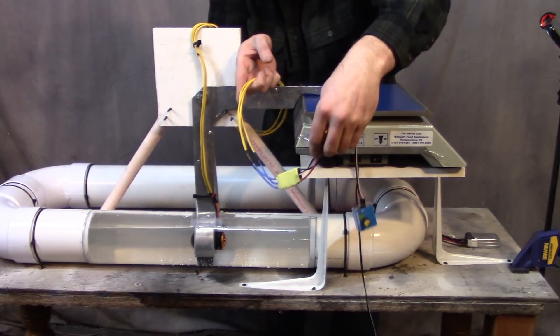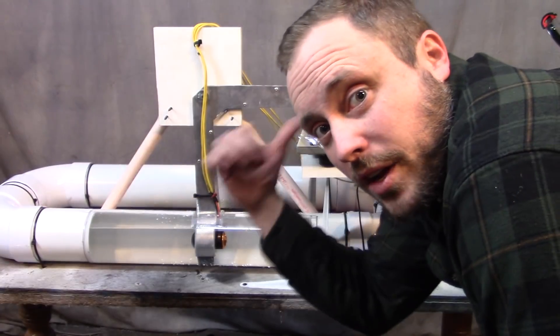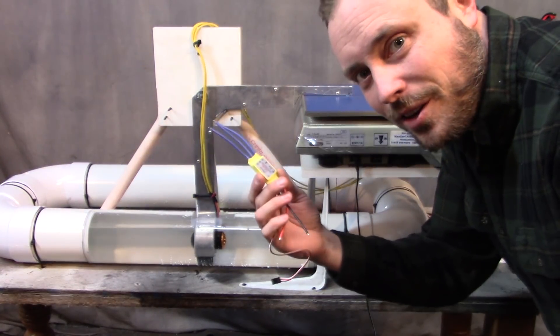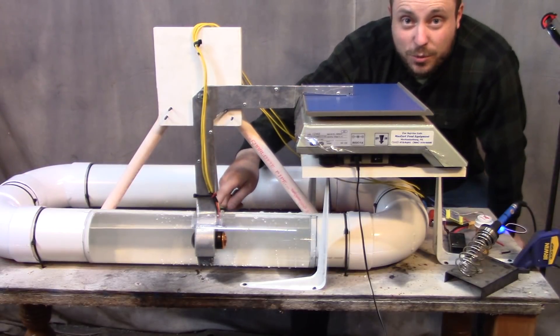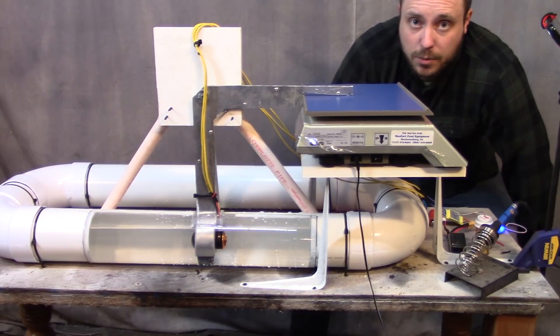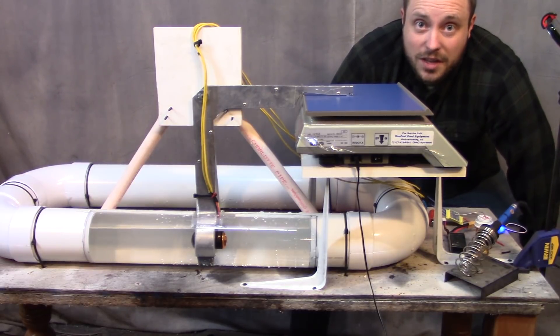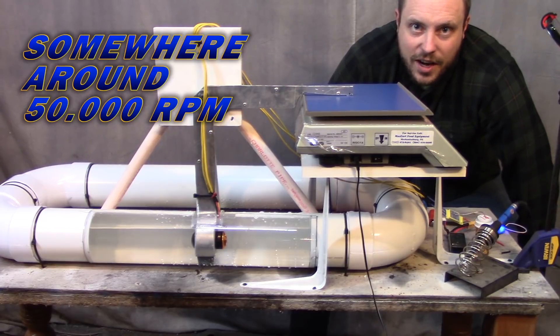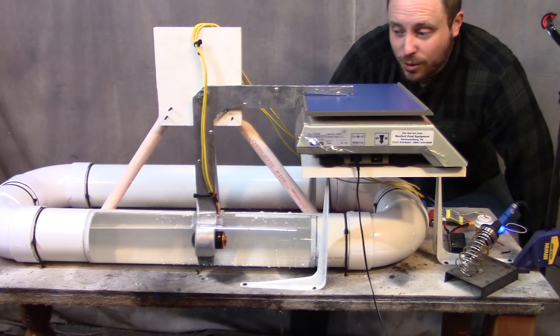Whoo, that speed controller is cooked. Got to do it again anyway because the camera wasn't recording that was looking at the scale. Good thing I got extras. Pop this on and try it again. I do need to mention that the kV rating on this is really high but you multiply that by the volts and you get the RPMs that it wants to go maximum theoretically. Point is stuff spins slow in water and this thing wants to go super fast like it's in the air. So I planned on burning up speed controllers.